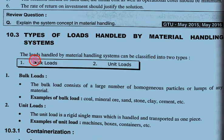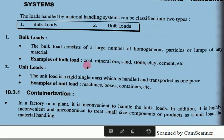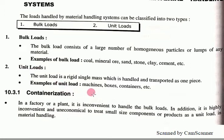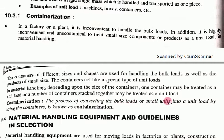There are two types of loads handled by a material handling system: bulk load and unit load. Bulk load consists of a large number of homogeneous particles or lumps of material such as coal, mineral ore, sand, stone, and clay. Unit load refers to machines, boxes, or containers that can be picked up and moved from one place to another. Containerization is the process of converting bulk load or small units into a unit load using a container.